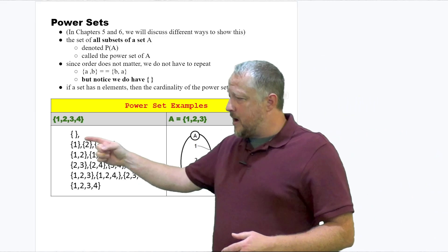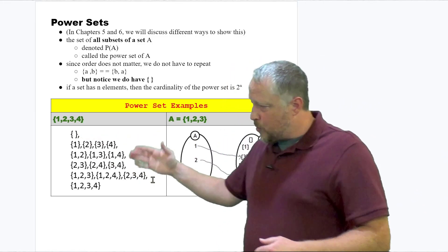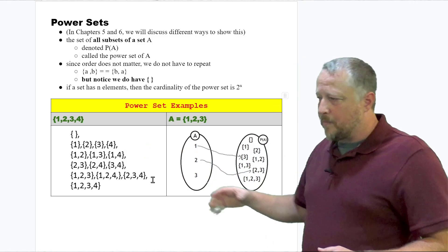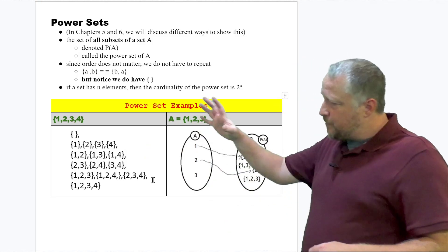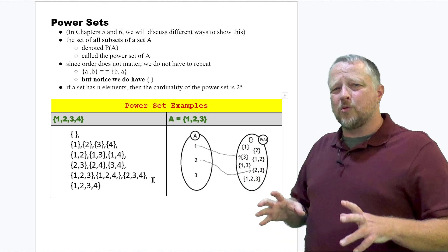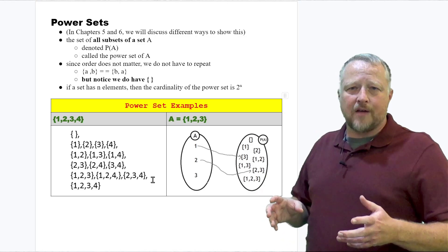Again, notice that we always start off with the empty set, and then we move on from there, the individuals, and then go up from there. So that's your difference when set up for power sets that we actually will go into more in chapters five and six.